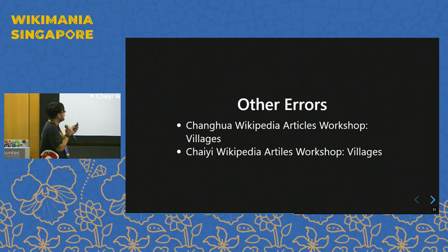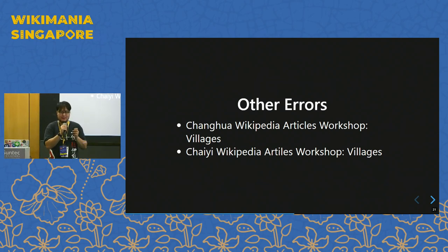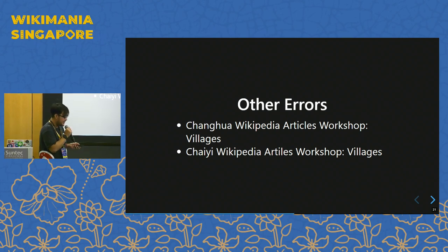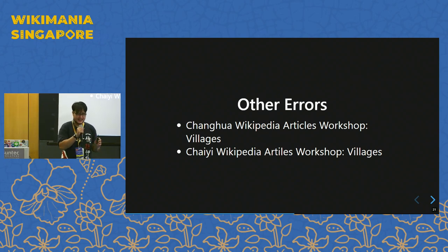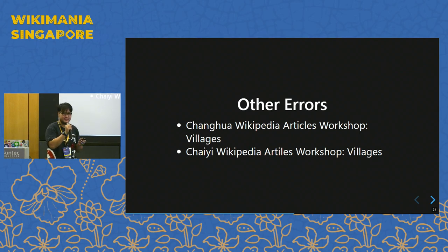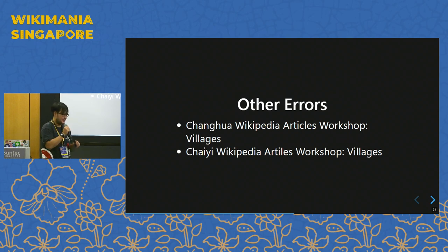Another area of error: some local projects were going on to establish villages in Taiwan, like Zhanghua County and Jiayi County. They created Wikipedia articles but didn't notice that Wikidata exists, and didn't cross-link on the Wikipedia items. Someone may have mass-imported to establish new Wikidata items, creating duplicates. Compared to the previous issue, this is a much smaller scale.